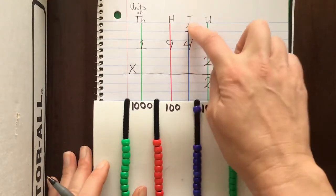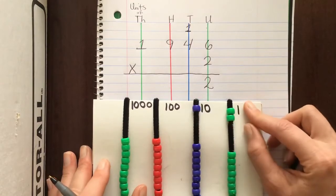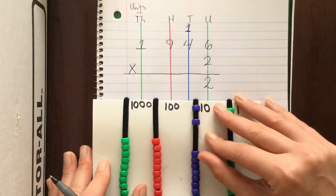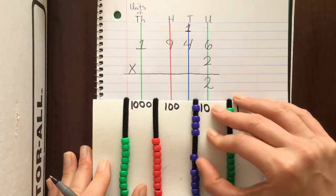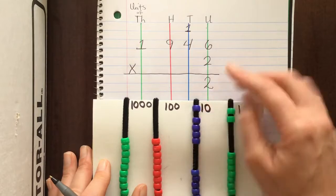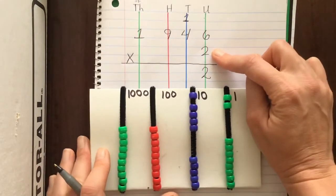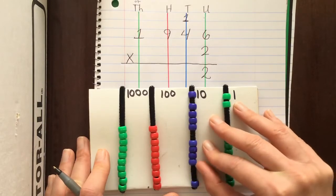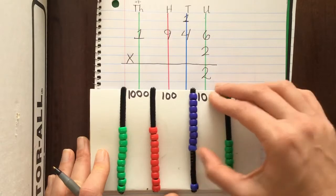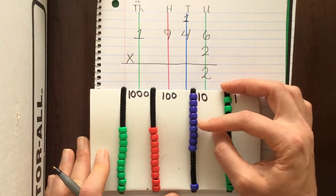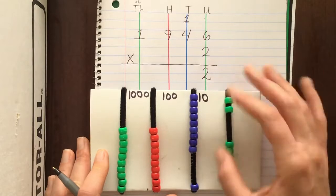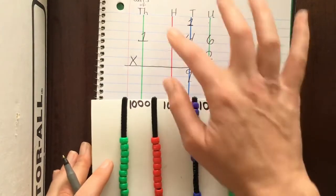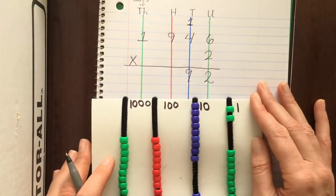Now let's move to the tens place. We already have that one ten that we exchanged, and this tells us we need four tens: one, two, three, four. Our multiplier says to do that twice, so let's make another group of four: one, two, three, four. We can put it all together and count: one, two, three, four, five, six, seven, eight, nine. We have nine tens total.